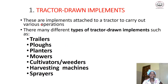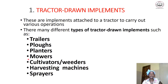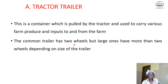Tractor-drawn implements are implements attached to a tractor to carry out various operations — you have one implement but in order for that implement to work, you need to attach it to a tractor. There are many tractor-drawn implements; for example, we have trailers, plows, planters, mowers, cultivators or weeders, harvesting machines, sprayers, and so on.